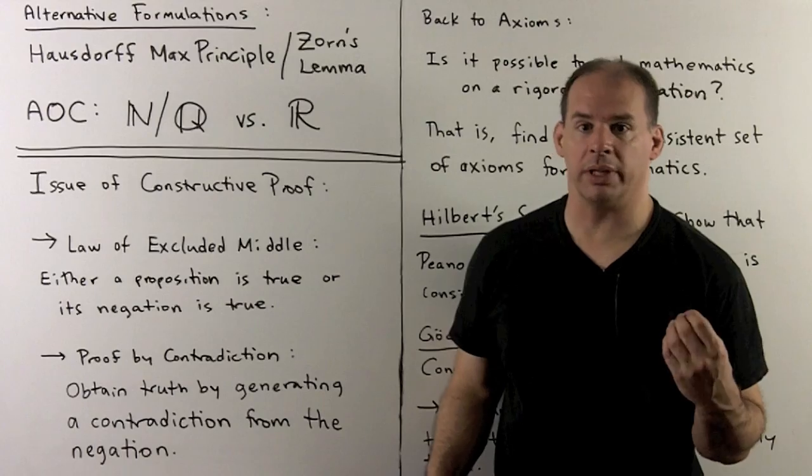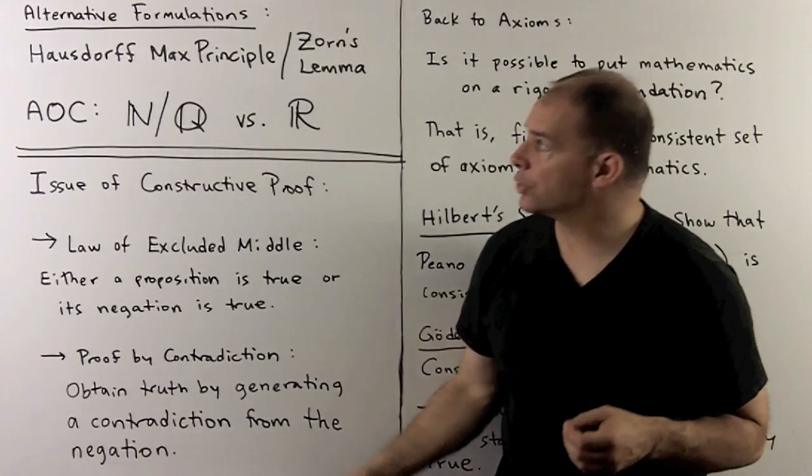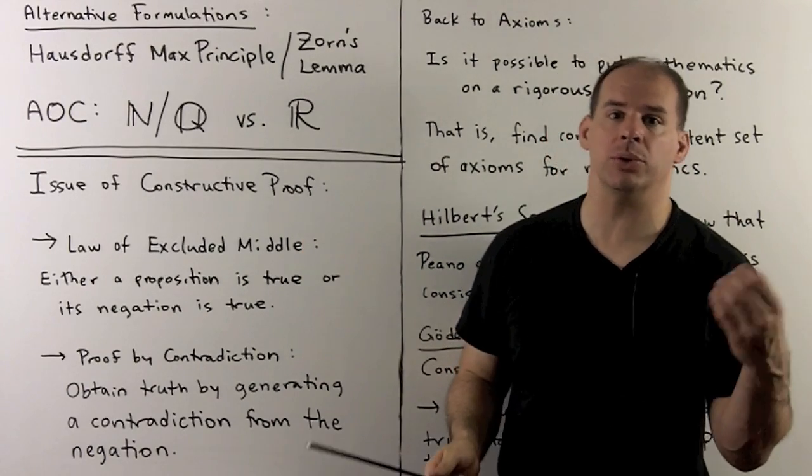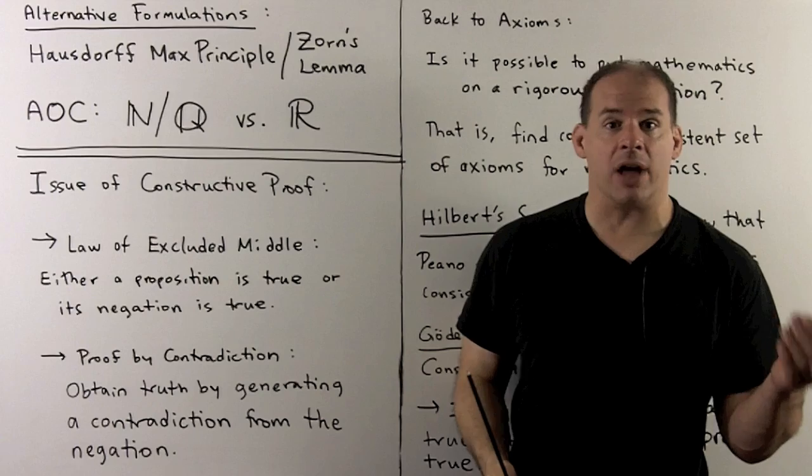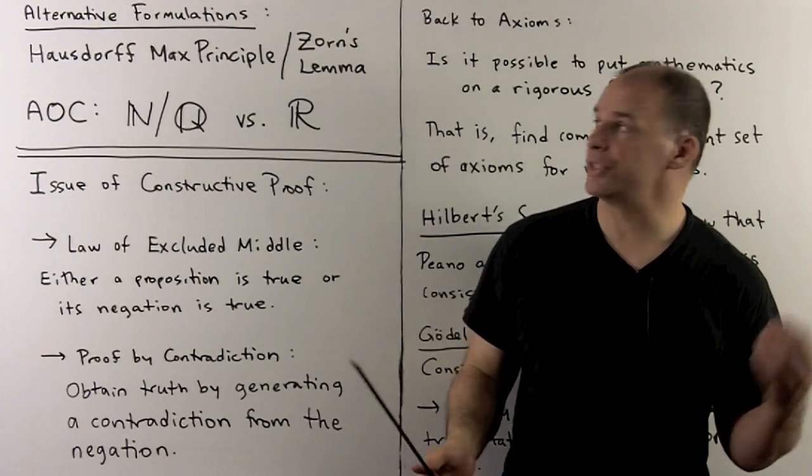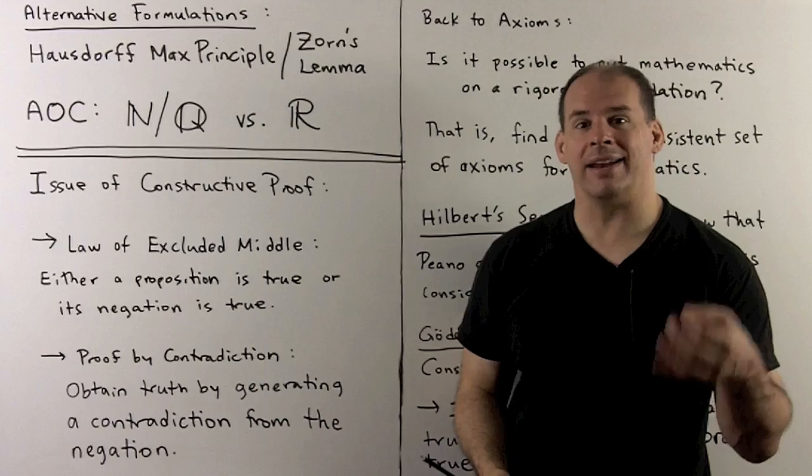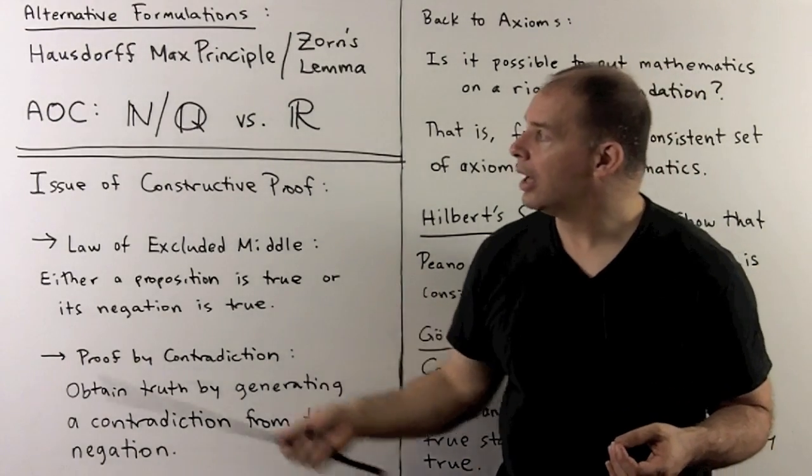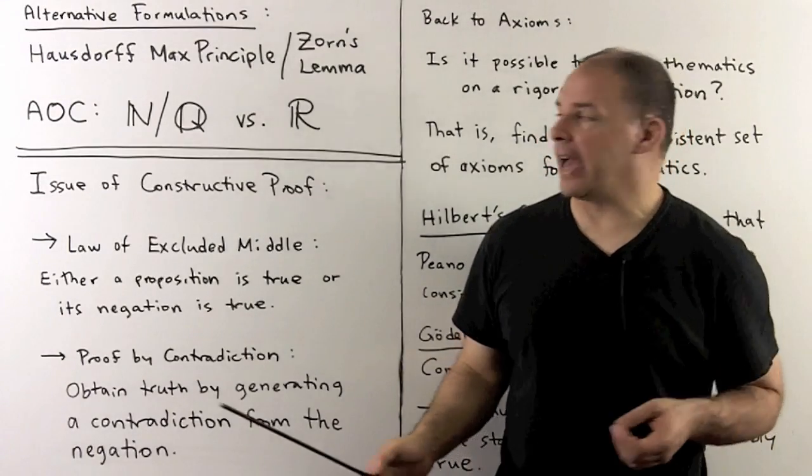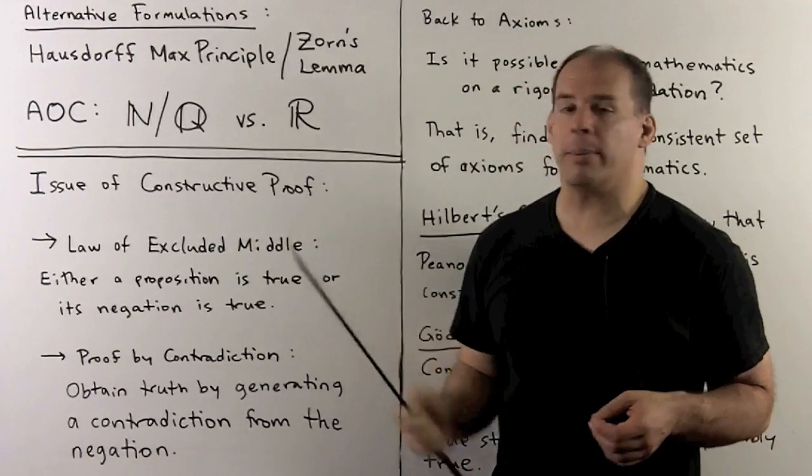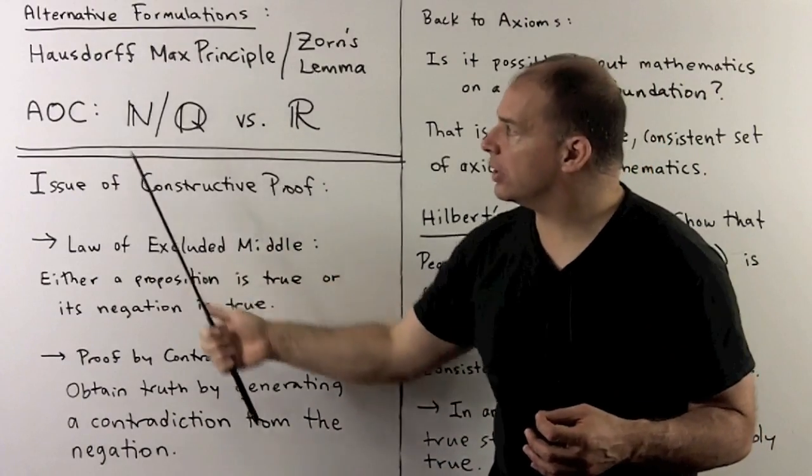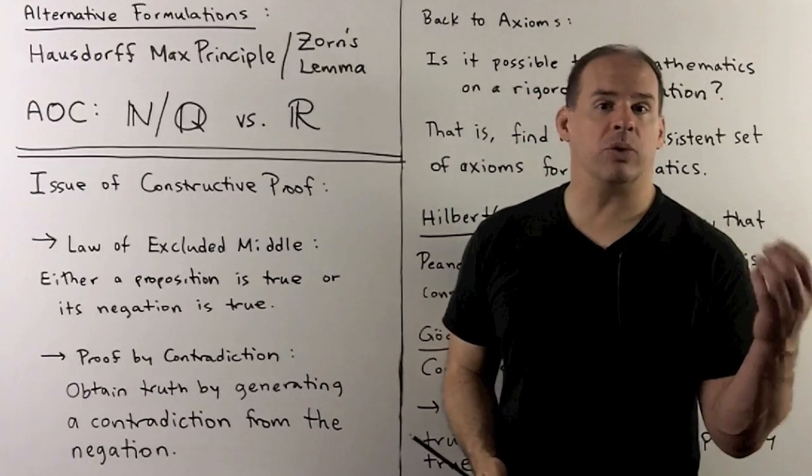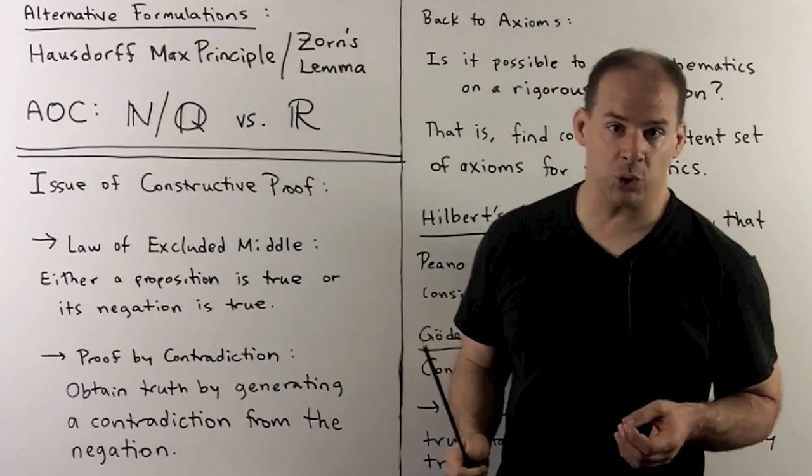We note some useful alternative formulations of the axiom of choice. For instance, we have the Hausdorff Maximal Principle and Zorn's Lemma. We won't say what these are here, but we do note these are the formulations we typically use in algebra, analysis, and geometry. For instance, we use Zorn's Lemma when we show that an infinite dimensional vector space has a basis. Final note on the axiom of choice: if we reject the axiom of choice, we could still work with the natural numbers and the rational numbers—the operations here typically only depend on a finite number of choices—but we lose the real numbers. To put the real numbers on a rigorous basis, we need the axiom of choice.